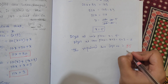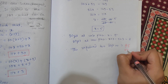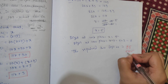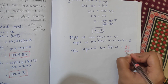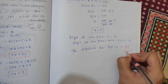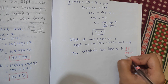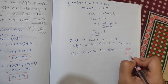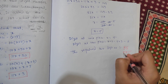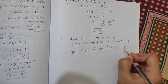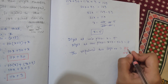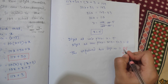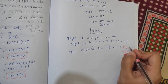Some of you may get the answer 58, which is also correct because the difference between the digits is still 3. If you took the tens place digit smaller than the unit place digit, you get 58. If you took unit place smaller than tens place, you get 85.